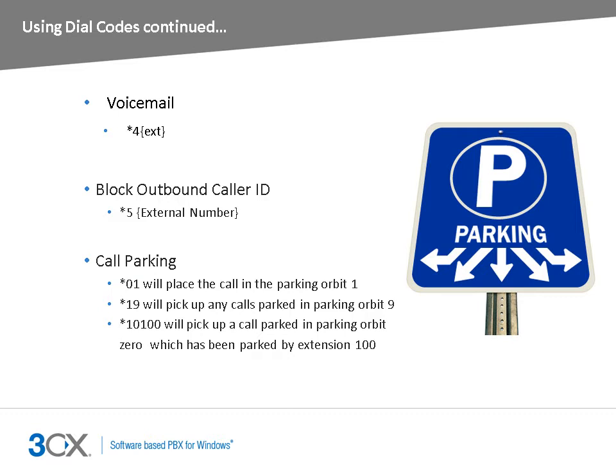The call parking feature allows you to park a call in a parking orbit and pick it up from another extension. To park a call, perform a blind transfer followed by dialing a key combination from star 00 up to star 09 — there are 10 parking orbits available. For example, star 01 will place a call in parking orbit 1. To pick up a parked call, dial star 1 followed by the parking slot. For example, star 19 will pick up a call stored in parking orbit 9.